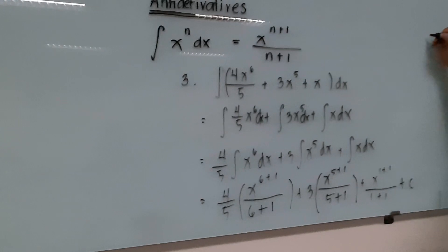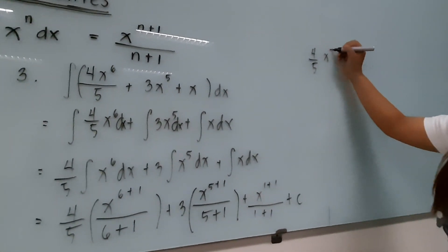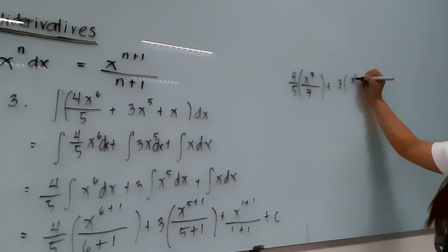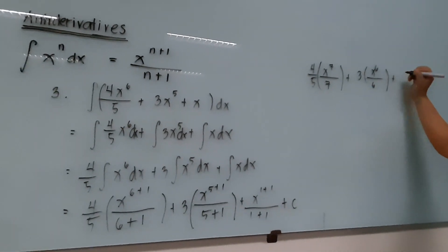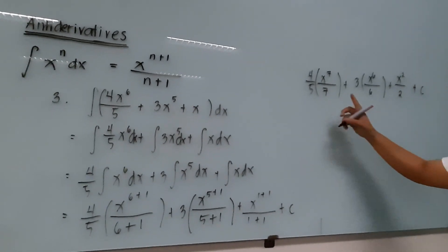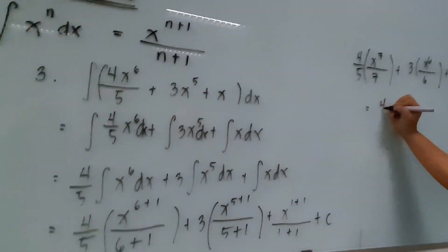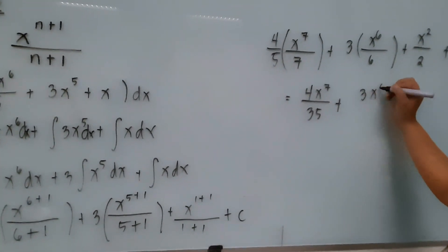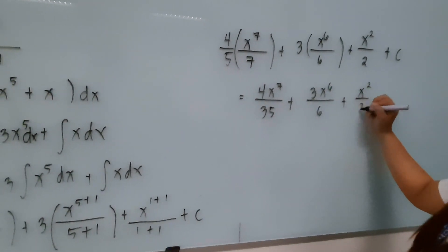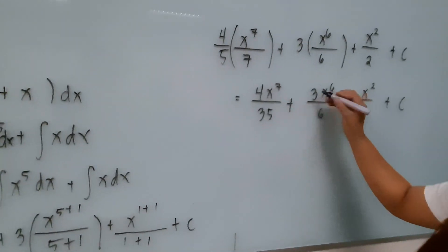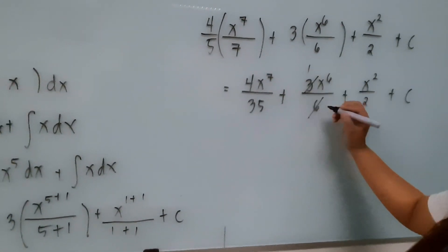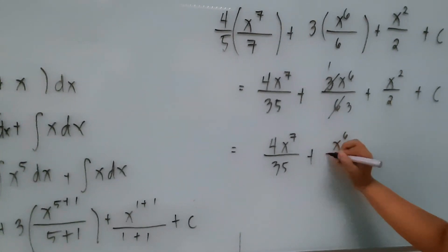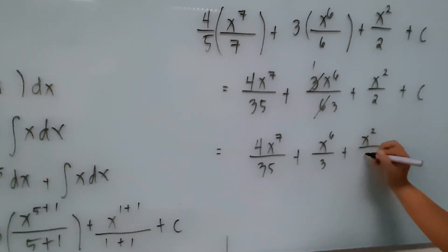Simplifying: 4 over 5 times x raised to 7 over 7, plus 3 times x raised to 6 over 6, plus x squared over 2, plus C. Multiplying through the fractions: 4x raised to 7 over 35, plus 3x raised to 6 over 6, plus x squared over 2, plus C. Since 3 and 6 are both divisible by 3, the final answer is 4x raised to 7 over 35, plus x raised to 6 over 3, plus x squared over 2, plus C.